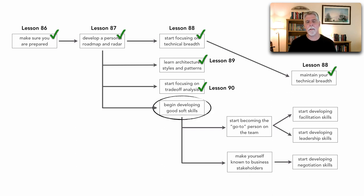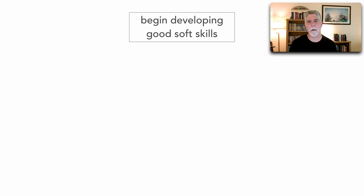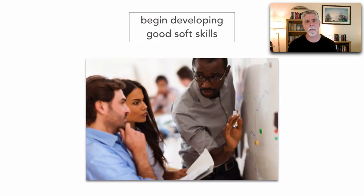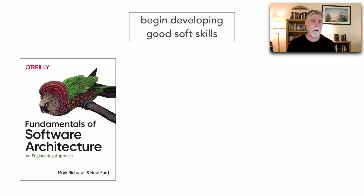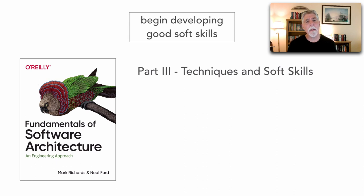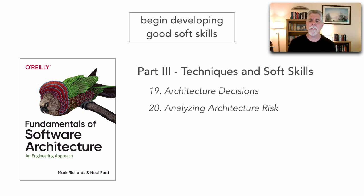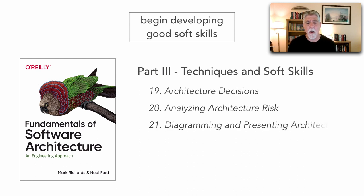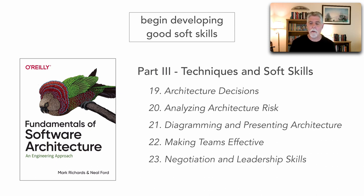In this final lesson of the roadmap we'll take a look at developing good soft skills. This is an essential skill as a software architect for facilitation, negotiation, and leading teams. In my book 'Fundamentals of Software Architecture' that I wrote with Neal Ford, published in February 2020, we devote one-third of the book to the techniques and soft skills of architecture — covering making architecture decisions, analyzing architectural risk, diagramming and presenting, making teams effective, and negotiation and leadership skills.